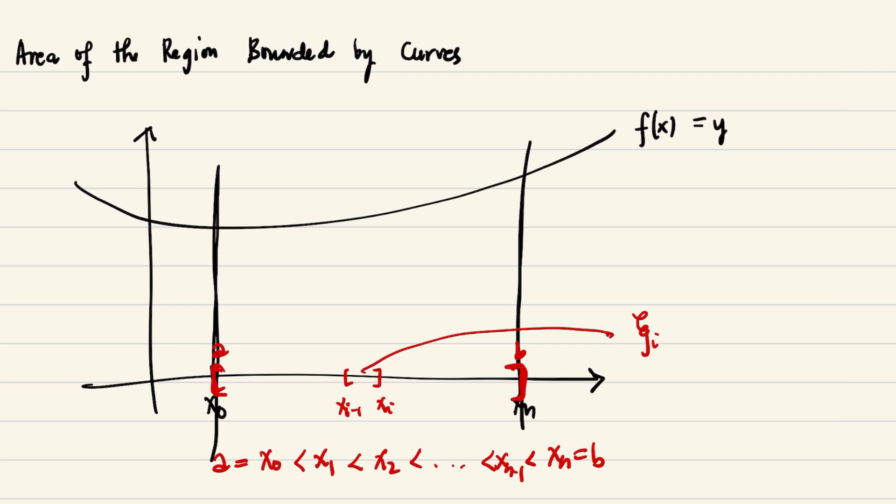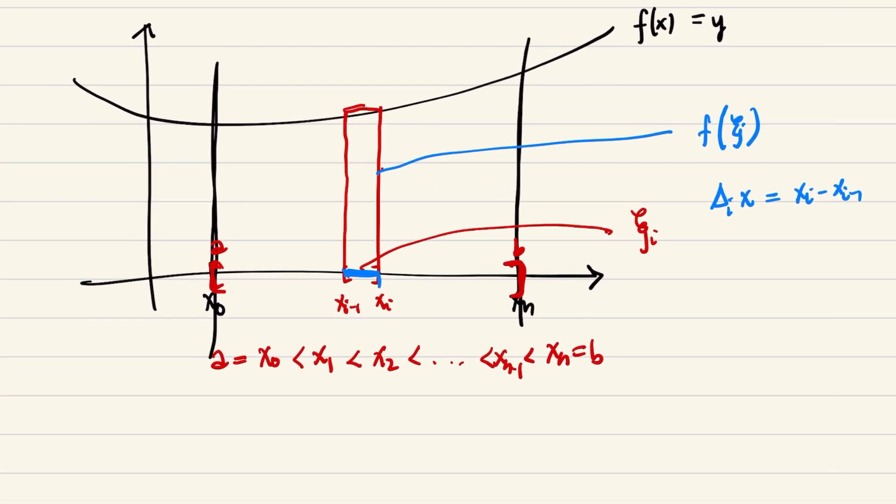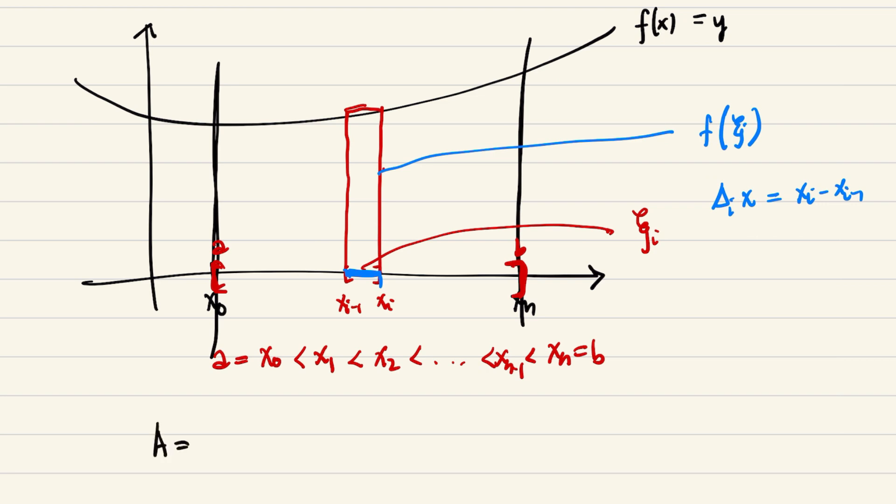By this, we construct a rectangular part of the region. The length is f of psi sub i, and the width of this rectangle will be the change of x with respect to i, so we have x sub i minus x sub i minus 1. Remember from high school geometry that the area of a rectangular region is given by length times width. So our area is f of psi sub i times x sub i minus x sub i minus 1 square units.